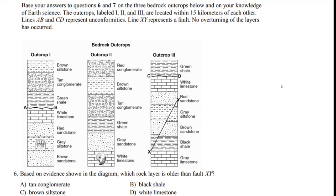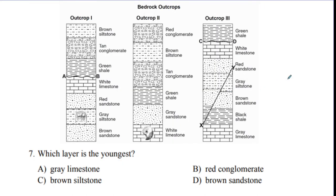Question six on rock correlation: which rock layer is older than the fault? The black shale, brown sandstone, gray siltstone, and red sandstone must all have been there before the fault because they're all affected by it — they're all broken. The answer is B — black shale.